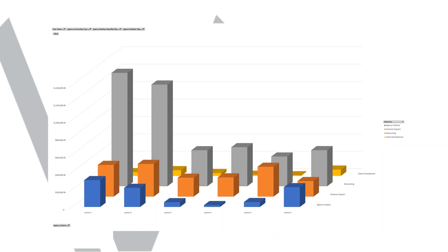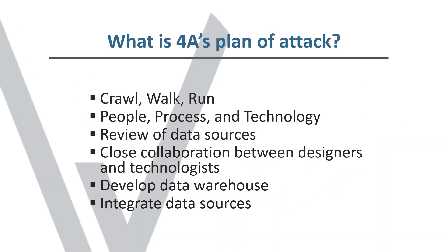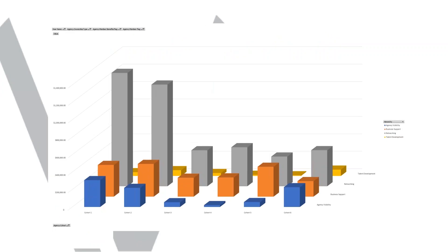The next screen shows a visualization shared with staff. It was interesting to get their feedback because they know their members and had ideas of what engagement would look like. These are cohorts ranging from small agencies to very large agencies, showing the difference for the four main engagement objectives by cohort. When the staff saw this, some things were what they expected — they nodded their heads — and other things were surprising to them.